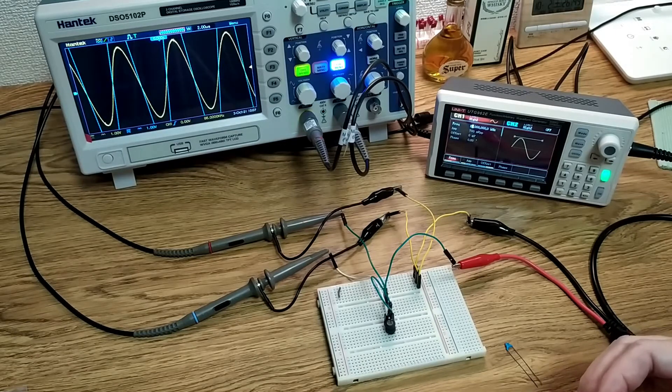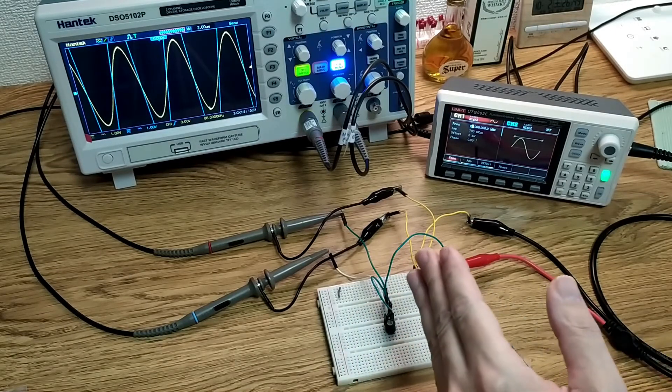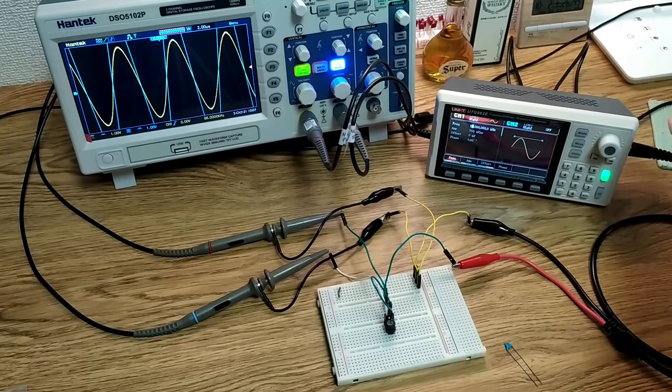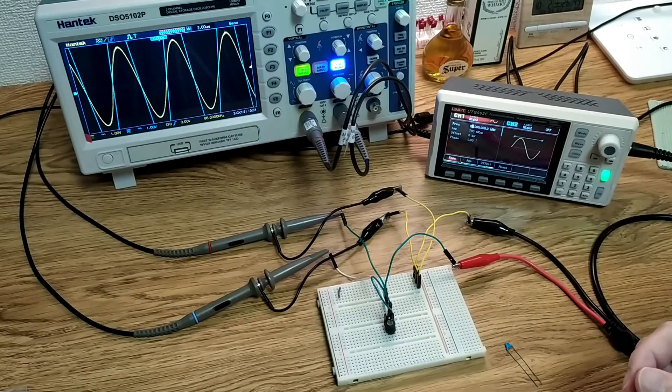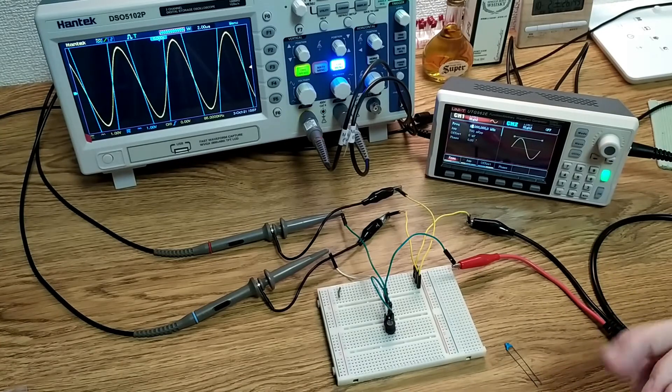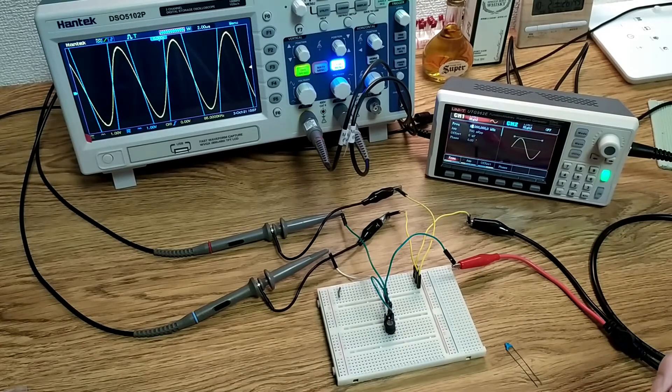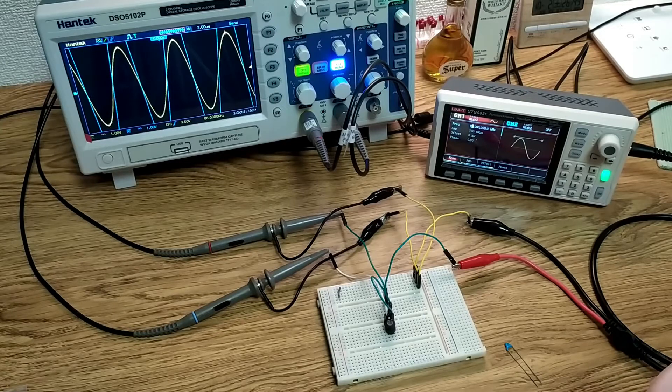As you can see, the setup here is fairly simple. We have a function generator putting out an 86 kilohertz signal, because that approximates what I had in the Pioneer. Most of the Pioneer decks seem to be around that.